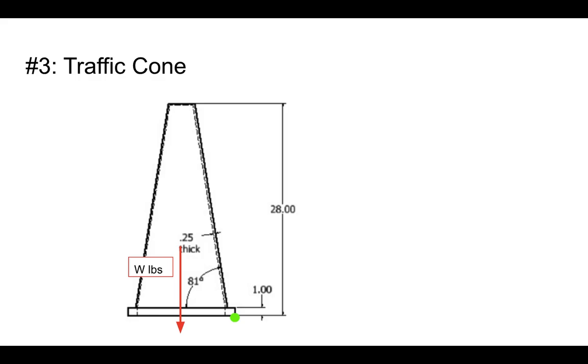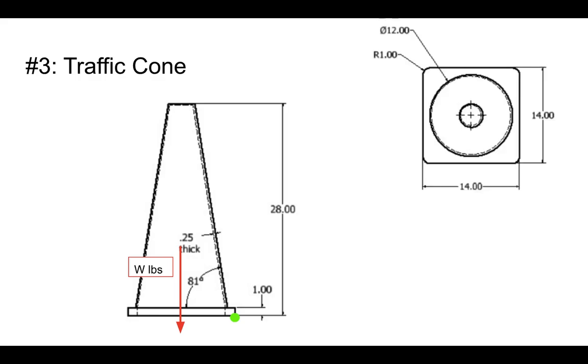We're going to solve for that here in just a second. W pound force that's pulling downward. Now we need to know if we have a vertical force, we need a horizontal distance. What is the horizontal distance between that red line, that force that's being applied, and the green dot?